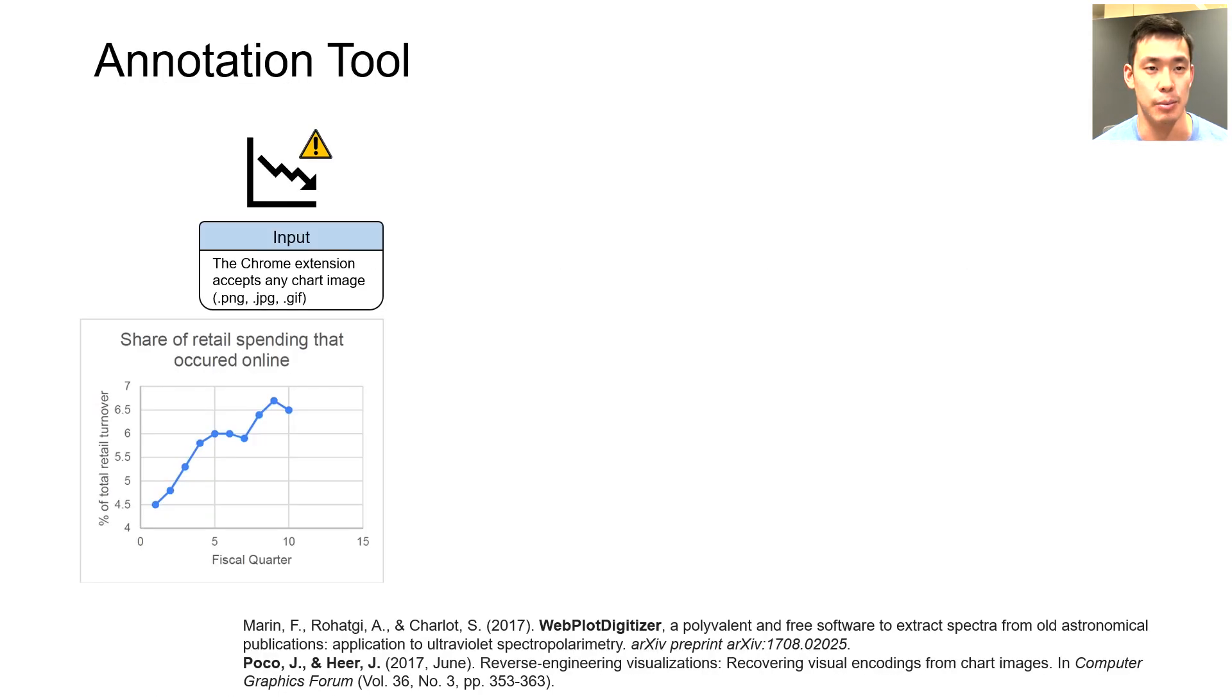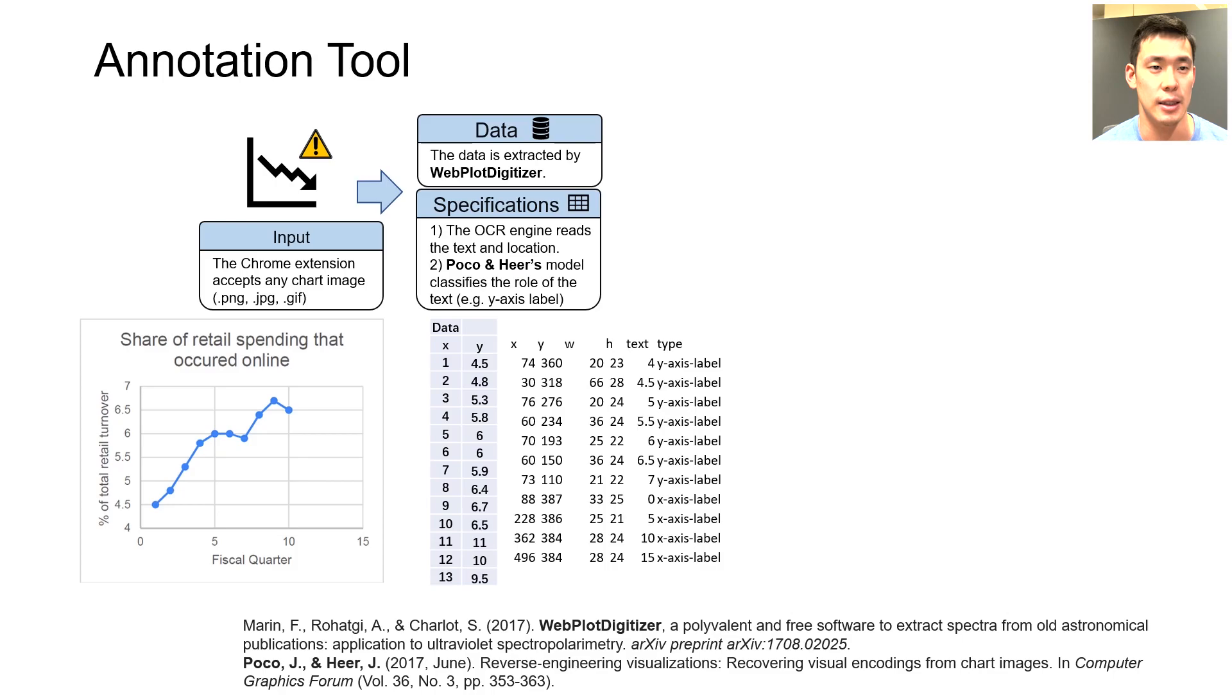The pipeline of our tool is simple. It accepts any chart image on the internet as input, the data extracted by Webplot Digitizer and the specifications by Reverse Engineering Visualizations. These specifications refer to the locations of the text elements.